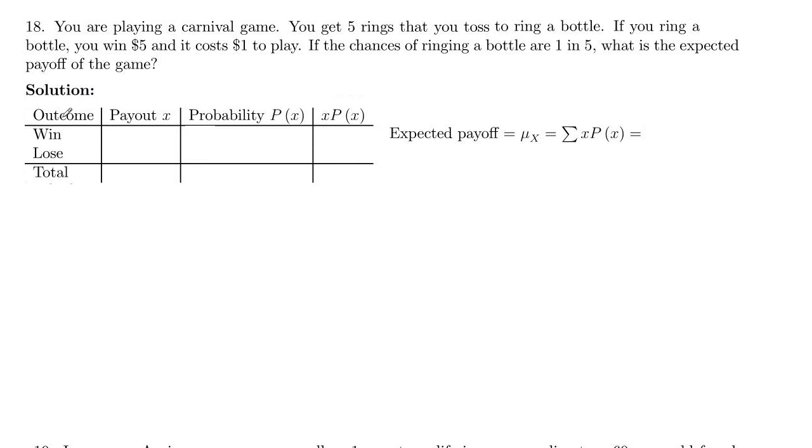So our outcome here: the payout x for the outcome, the probability of that outcome, and then x times probability, which is the contribution to the total payoff.